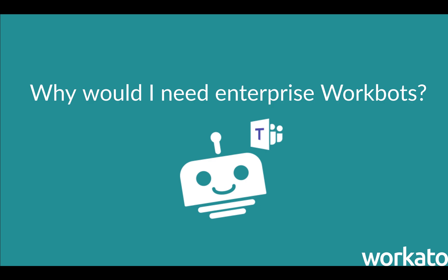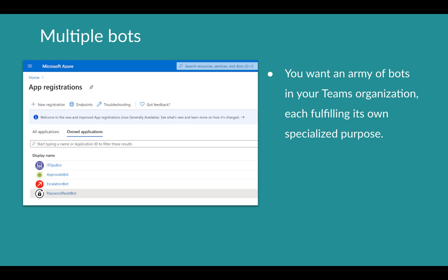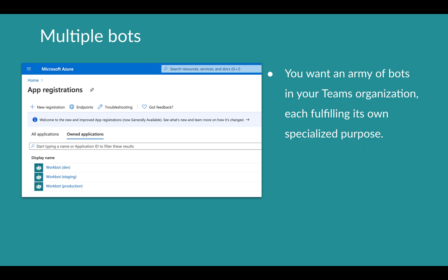So why should you care about Enterprise Bots? Enterprise WorkBots are a pretty huge deal because you can now have multiple WorkBots in the same MS Teams group. For example, you could have ApprovalsBot, which could manage expense or PTO requests and approvals. But you could also have ITOpsBot — a bot that handles equipment requests, a very useful bot now that most people are working from home during the COVID era. Or you could have your dev, staging and production bots coexisting peacefully in a single MS Teams group, greatly simplifying the bot development lifecycle.